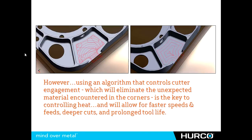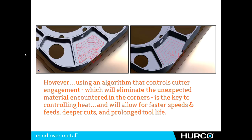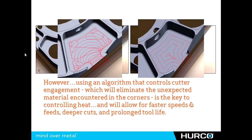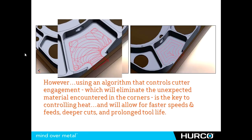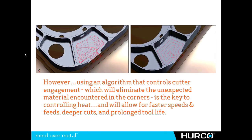If we employ an algorithm used in high-speed machining that will consistently control the amount of material that tool is going to encounter, we're going to see something like the tool path on the left — very different than the one on the right. The one on the right is what we call the typical racetrack pattern, where the tool just follows the shape, steps into the center, follows the shape, steps into the center and so on. The tool path on the left shows that we are consistently altering the tool path so we never encounter more material than is specified.